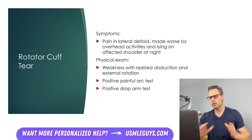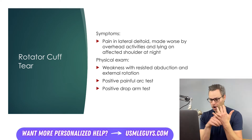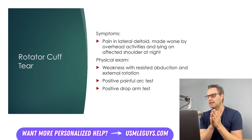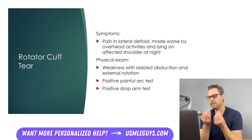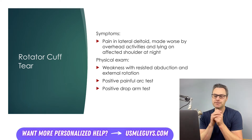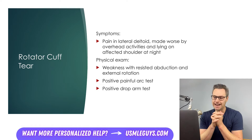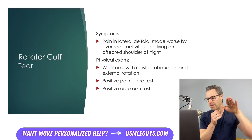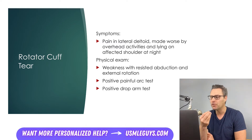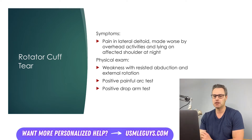Other exam maneuvers include the painful arc test, which involves having the patient elevate the arms in the scapular plane then reversing the motion — this is positive if the patient has pain between 60 and 120 degrees. Another test is the drop arm test, where you elevate the patient's arm to 90 degrees abduction, release it, and let the patient lower the arm back to neutral with the palm down. If the patient's arm drops suddenly or they experience pain with that movement, the test is considered positive.